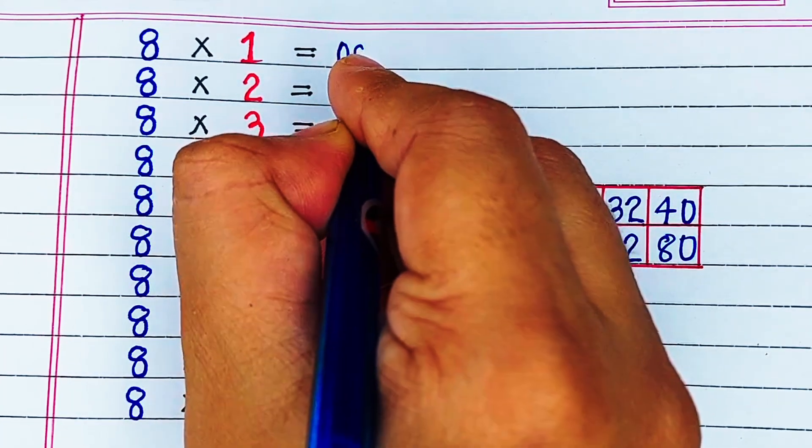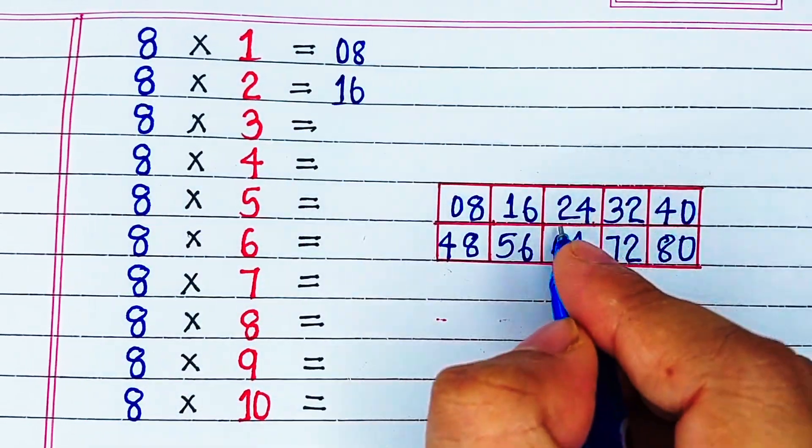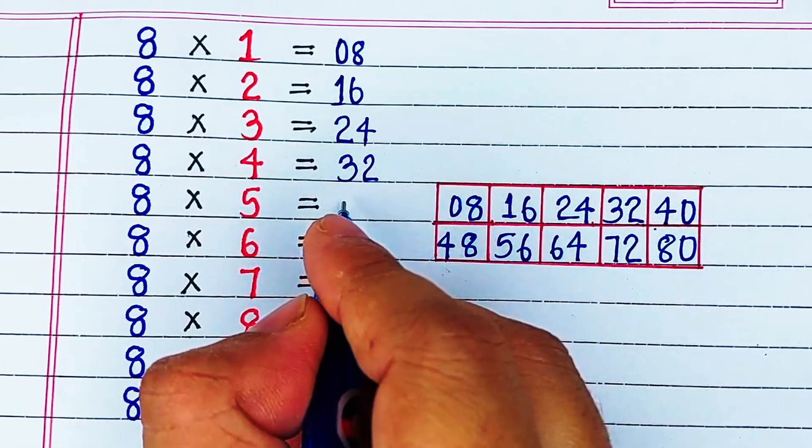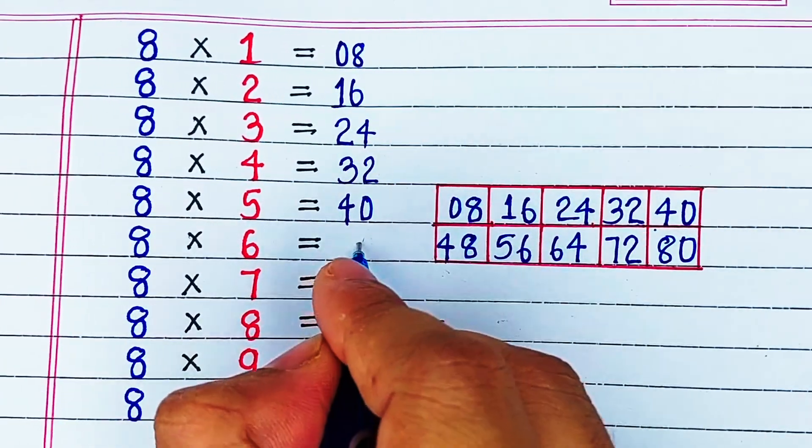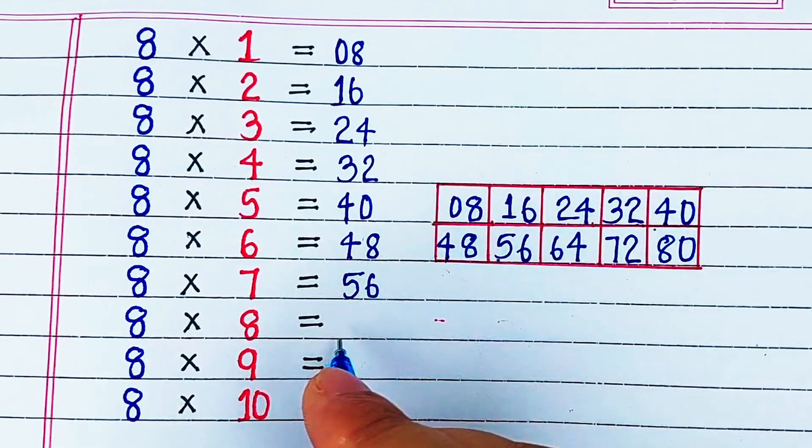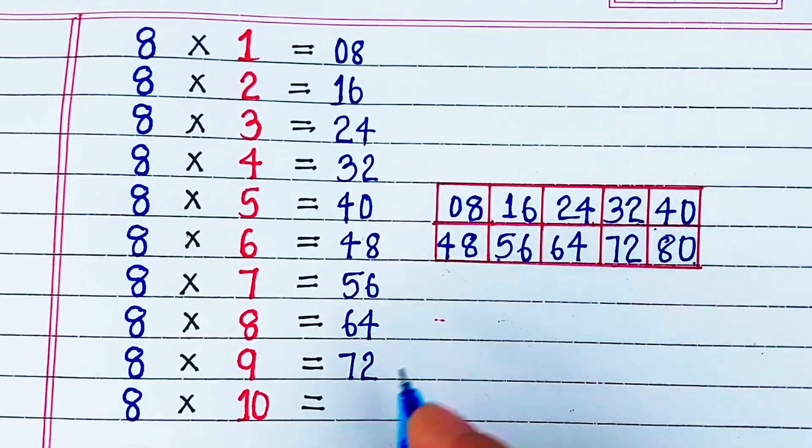Let's recite. 8 1s are 8, 8 2s are 16, 8 3s are 24, 8 4s are 32, 8 5s are 40, 8 6s are 48, 8 7s are 56, 8 8s are 64, 8 9s are 72, 8 10s are 80.